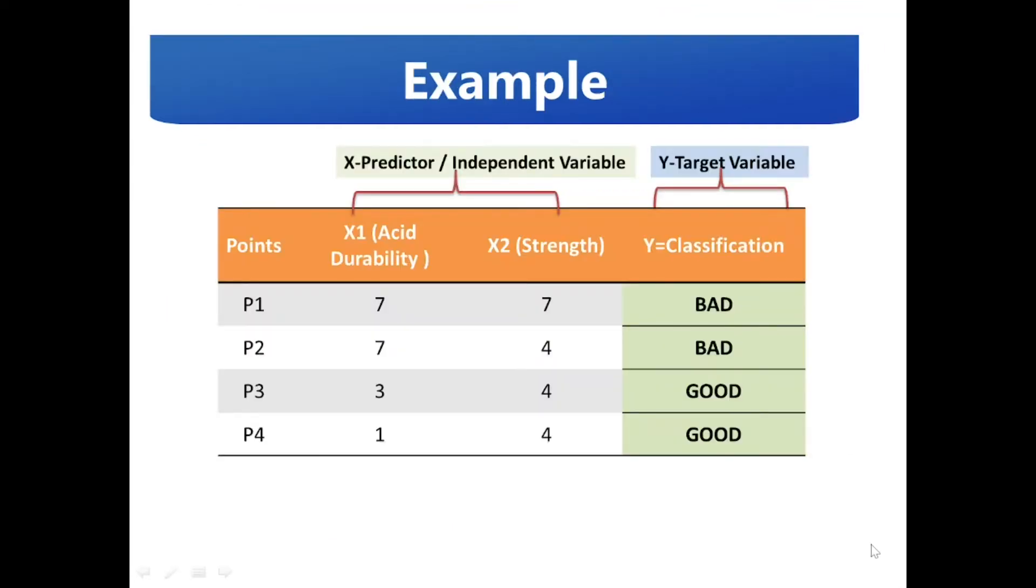Consider an example for KNN. The dataset here contains four points P1 to P4 with two dependent variables x1 and x2 representing the acid durability and the strength, and the output target variable as y with two major classifications of bad and good.